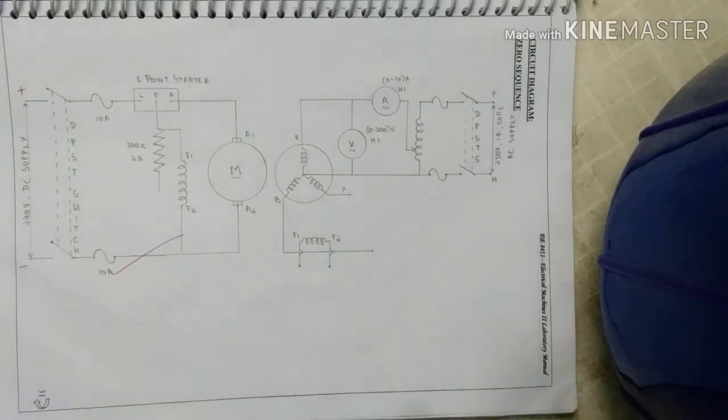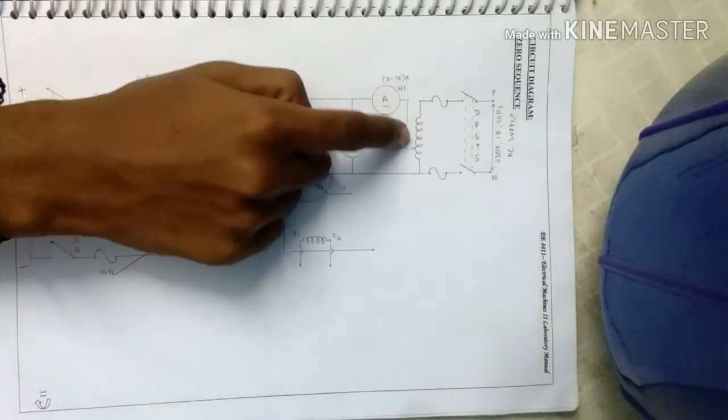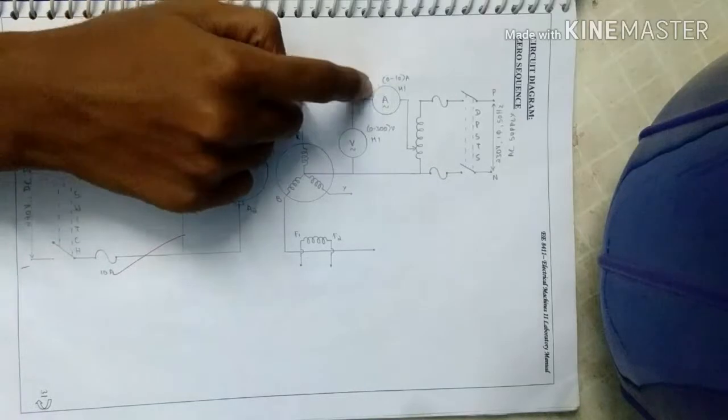The procedure for zero sequence is: connect the armature winding in parallel as per the circuit diagram, run the machine at the rated speed, apply 230 volt from variac and measure voltage and current.